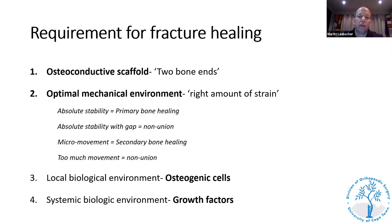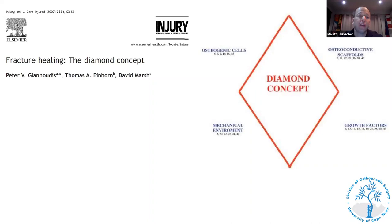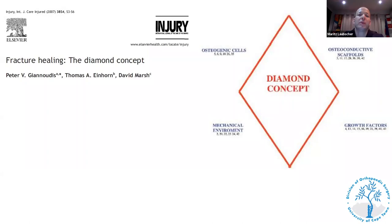What do we need for bone to heal? In the case of a fracture, there are four key ingredients: an osteoconductive scaffold — two live bone ends; the optimal mechanical environment; a good local biologic environment with the presence of osteogenic cells; and the right systemic biologic environment with the presence of growth factors. This is illustrated in the so-called diamond theory of fracture healing. It is important to think of these four ingredients to identify where the problem lies when addressing non-unions.